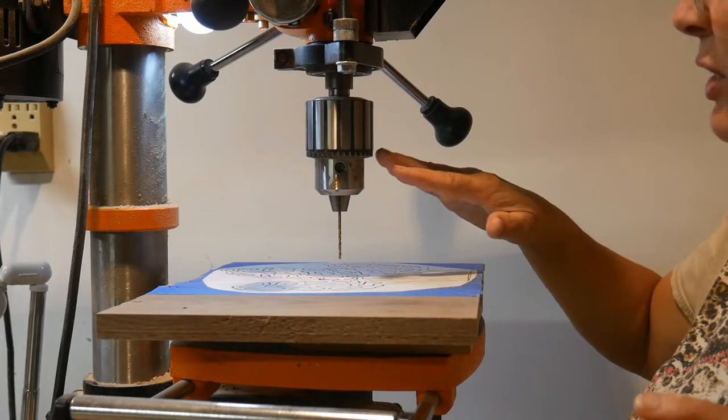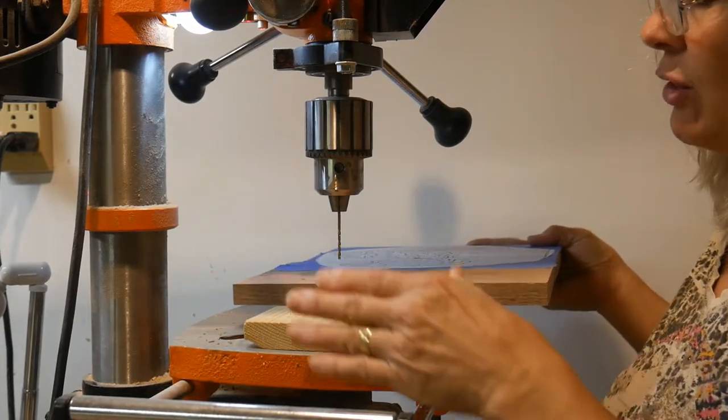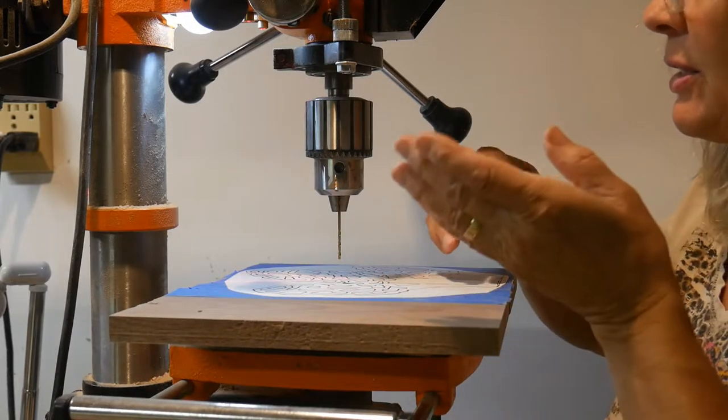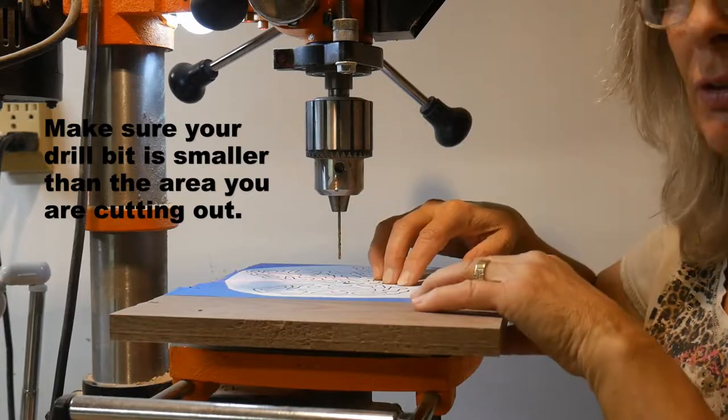I'm over here at my drill press. Make sure that you have a sacrificial piece behind your board so that you don't have tear-out on the other side. Because this trivet can be used on both sides, if you'd like.